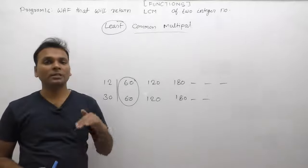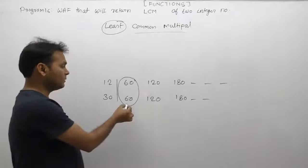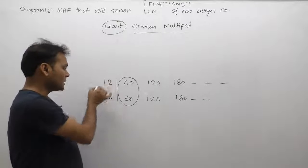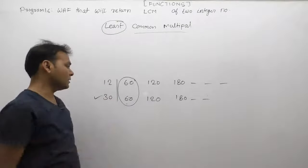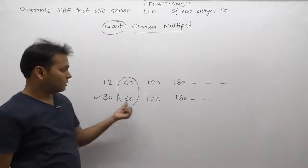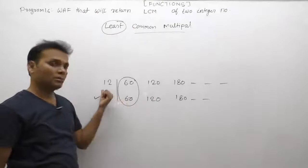The LCM is always greater than the maximum of the two numbers. First, we need to find the largest of the two numbers. In this case, the largest is 30. The LCM is always greater than the maximum number.